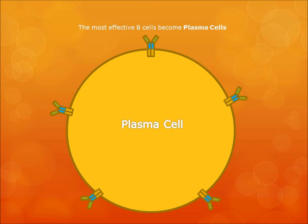B cells that produce the best BCRs and antibodies, and are the most effective at doing this, eventually become fully differentiated plasma cells. Plasma cells are cells whose only function is to produce and secrete antibodies. They continue to pump out antibodies until the threat has been eliminated. This ends the overall function and activation of B cells.